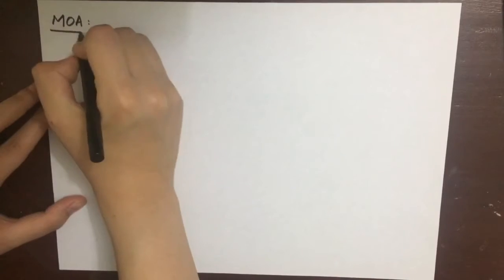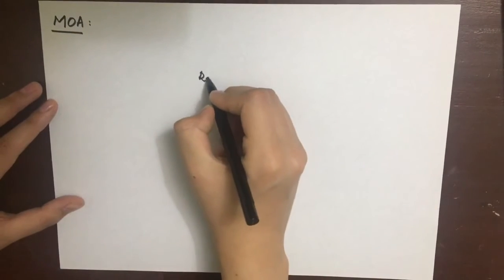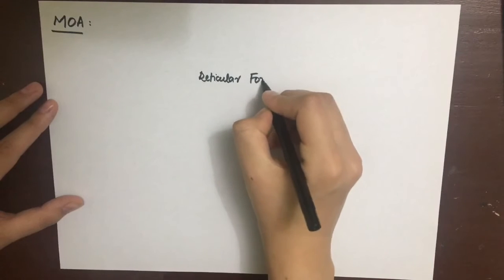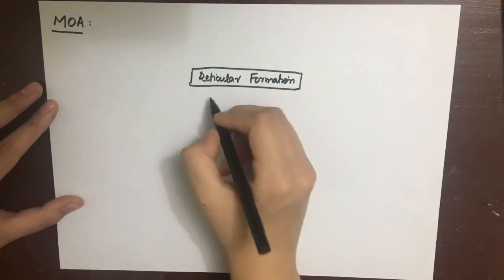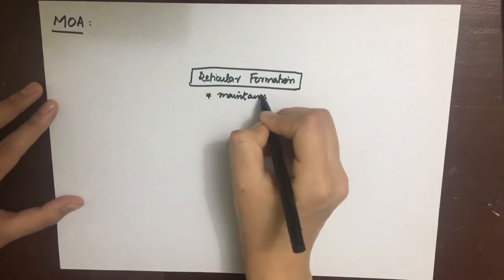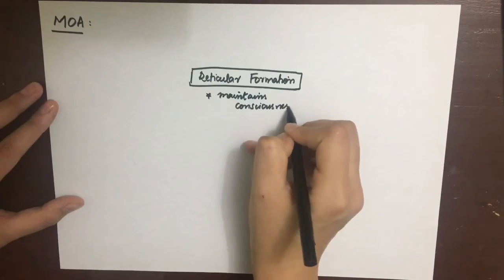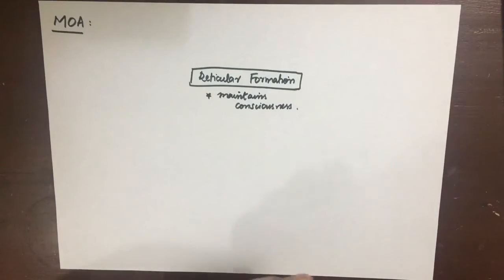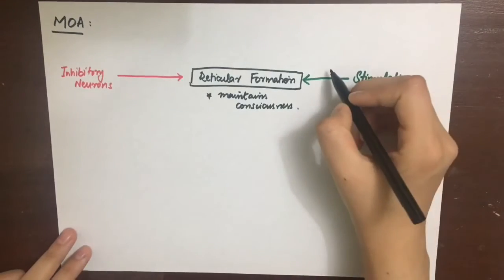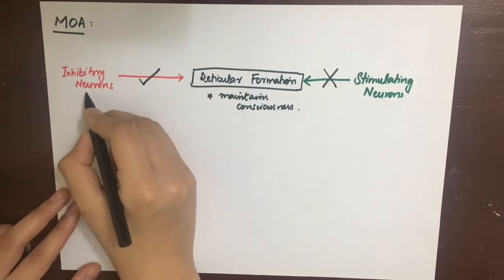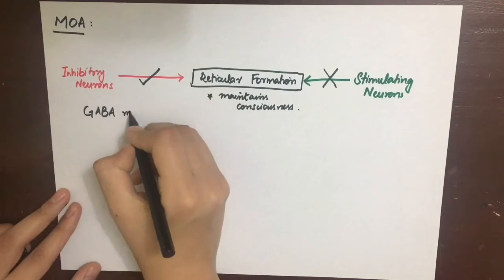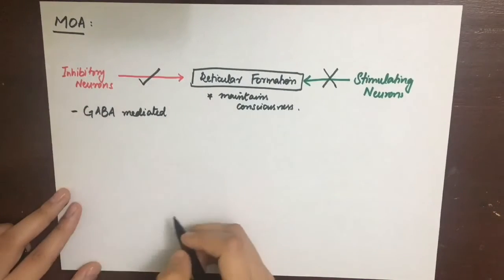Now let's look at the mechanism of action of the general anesthetics. We know that the reticular formation of the brain stem is basically responsible to maintain consciousness in a patient. There are some stimulatory neurons which stimulate the reticular formation and keep us awake, and then there are inhibitory neurons which inhibit the reticular formation and put us to sleep or anesthesia. Our goal here is to inhibit the stimulatory neurotransmission and stimulate or accentuate the inhibitory neurotransmission. We can interfere in this normal physiology by two ways.